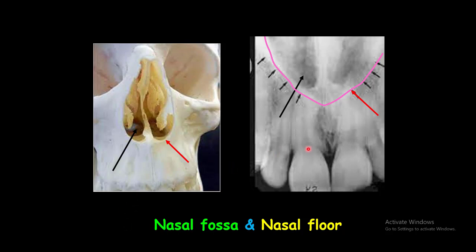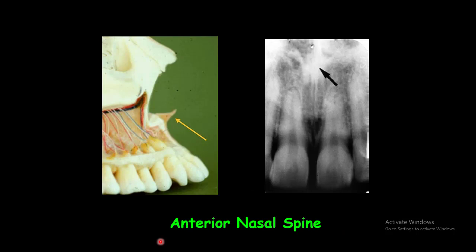On the maxillary incisors, the anterior nasal spine is a bony projection in the floor of the nasal aperture. In the periapical radiograph of the maxillary central incisors, it is located in the midline and 1.5 to 2 centimeters above the alveolar crest. It is seen as a radiopaque shape in the midline, just below the junction of the inferior end of the nasal septum.